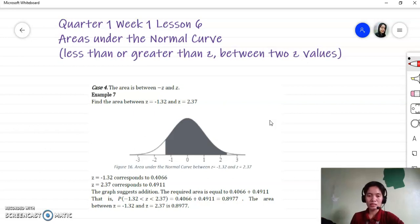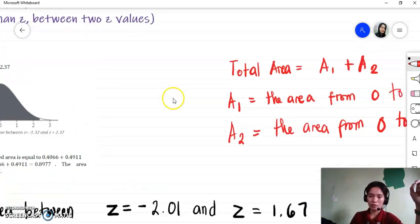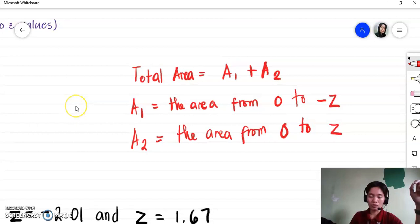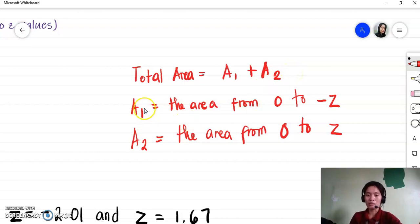For case number four, the operation that is involved here is addition. You're going to add two areas. The total area is equal to area 1 plus area 2, where area 1 is the area from 0 to negative Z, and area 2 is the area from 0 to positive Z.